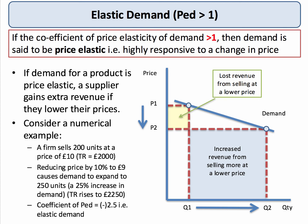Can you see that the lost revenue from the firm selling at the lower price, which is shaded in yellow, is significantly smaller than the blue area, which shows the increased revenue from selling more units, albeit at a lower price? So the quantity effect outweighs the price effect, and therefore we can show that the total revenue for the firm has increased.